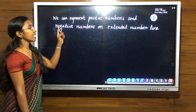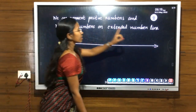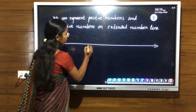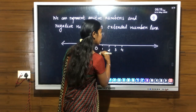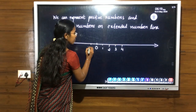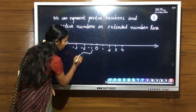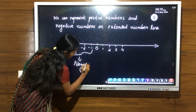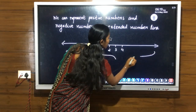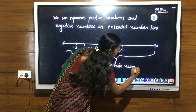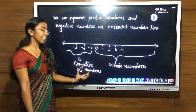We can represent positive numbers and negative numbers on an extended number line. Here we draw a number line — the arrow marks represent going on both sides. I am writing 0 here. 1, 2, 3, 4 — all positive numbers are on the right side of 0, and all negative numbers are on the left side: minus 1, minus 2, minus 3 — it goes on. This confirms that integers are the collection of whole numbers and negative numbers.